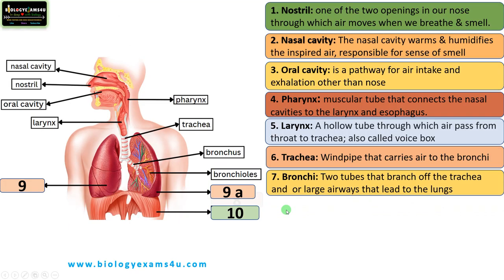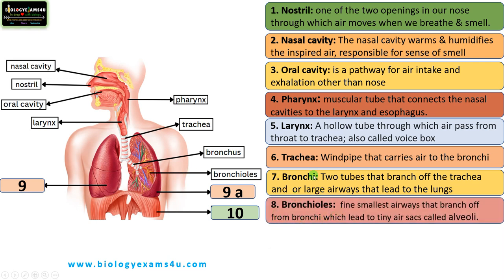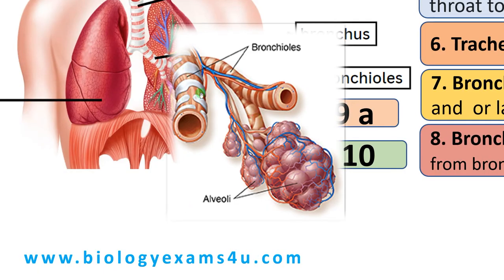The next structure is the bronchioles. Bronchioles are the smallest airways in our lungs and are the final air conductors that lack cartilage. The major difference between bronchioles and bronchi is that bronchi have cartilage. Bronchioles branch off from the bronchi and lead to fine air sacs called alveoli.